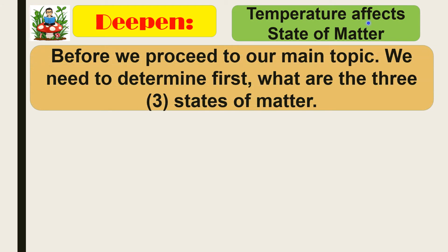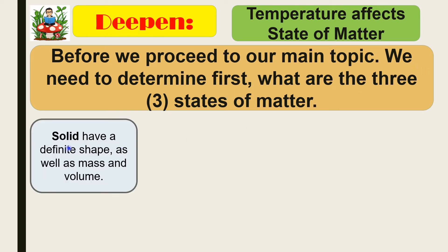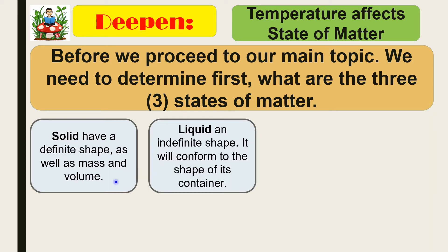Our lesson for today is all about how temperature affects state of matter. Before we proceed to our main topic, we need to determine first the three states of matter. The first one is solid. Solid has a definite shape as well as mass and volume. Examples of solid are things you can touch: books, pencil, computer, face mask, face shield.